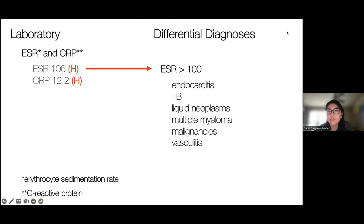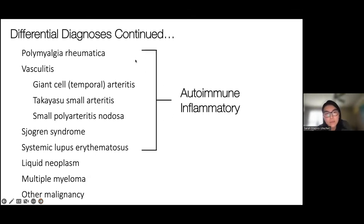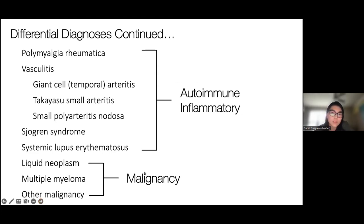With an ESR greater than 100 and our VINDICATE model pointing toward malabsorption and malnutrition, the differential diagnoses are mainly broken down into autoimmune and inflammatory processes and malignancy. The next step would be imaging.